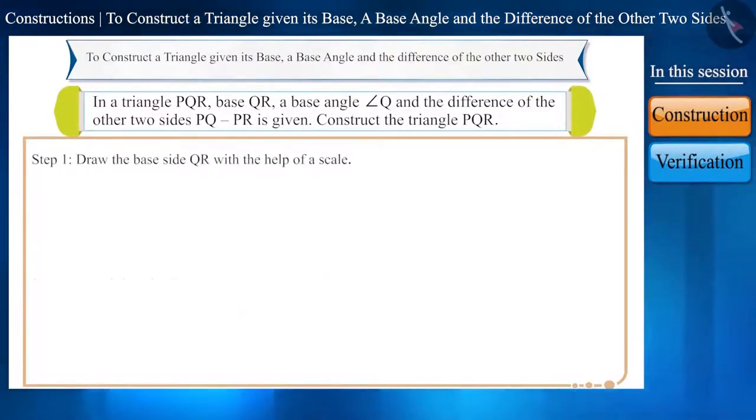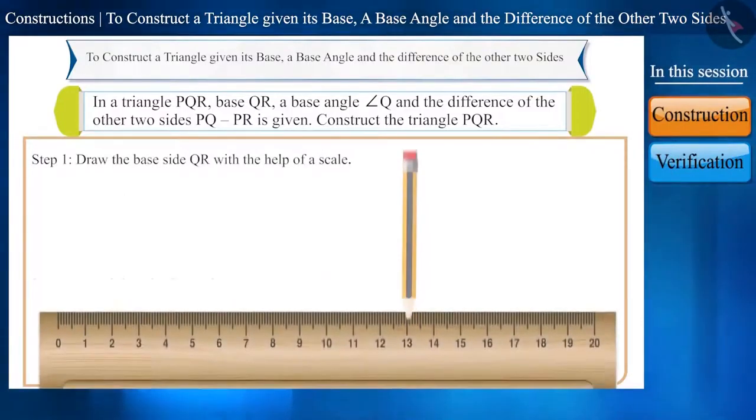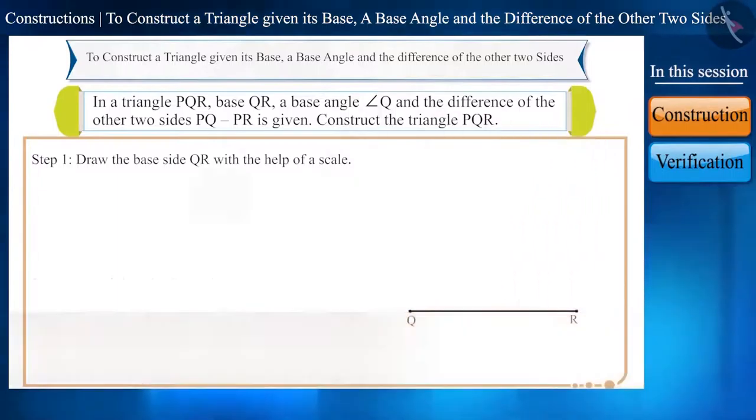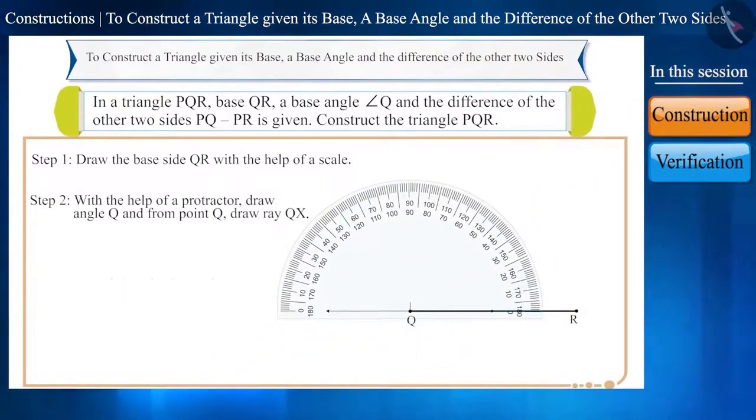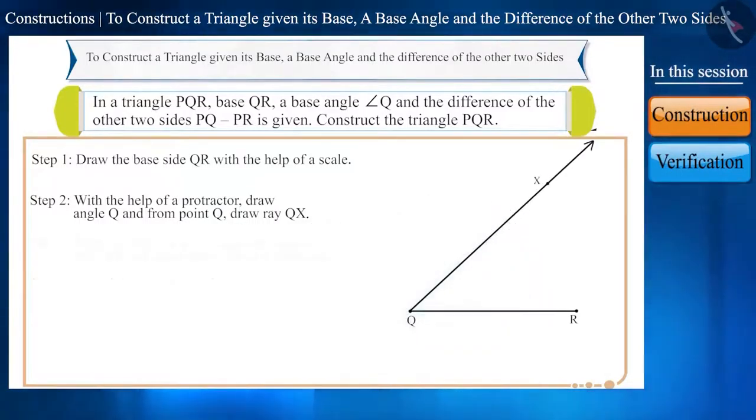Step 1. First of all, we will draw the base side QR with the help of a scale. Step 2. With the help of a protractor, we will construct the given angle Q and from point Q, draw a ray QX.